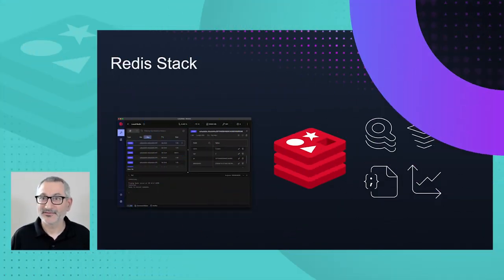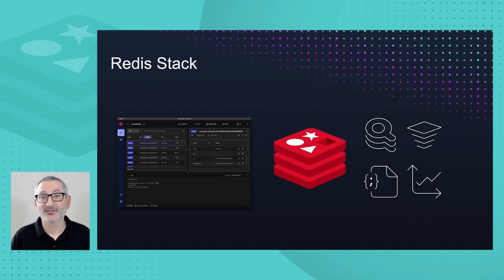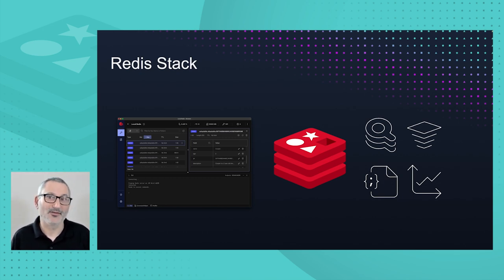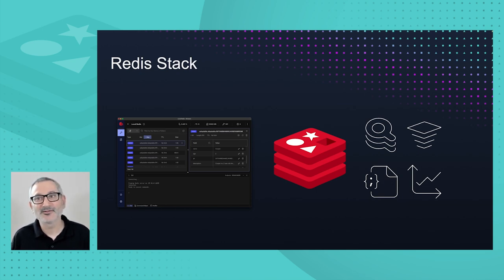What is Redis Stack? It's Redis core with additional capabilities. There's search, JSON, some extra probabilistic data structures, and a time series. In this session, we're going to focus on those search and JSON capabilities. Redis Insight is a desktop application that provides a graphical interface to view and manage data in Redis. It's an ideal companion to Redis Stack as it's built to work with those additional capabilities.